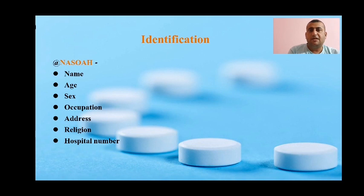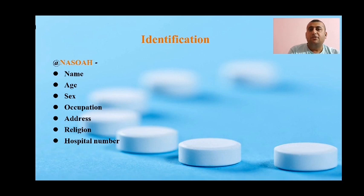Age is important because there are many diseases more common in younger age, middle age, or elderly people. For gender, there are diseases more common in males like X-linked recessive disorders, especially color blindness, while conditions like autoimmune diseases such as SLE and thyroid disorders are more common in females.